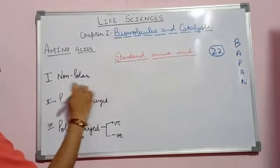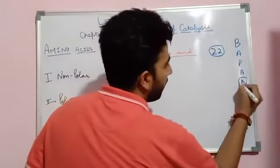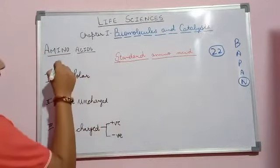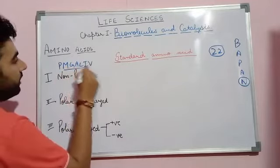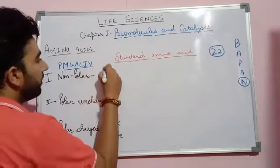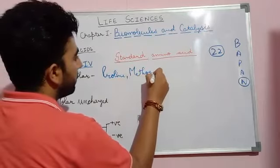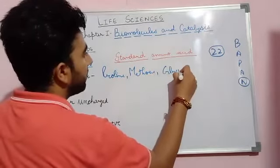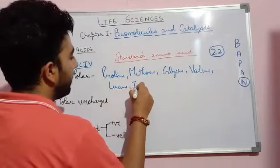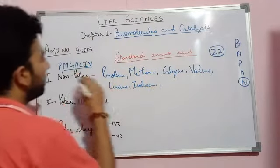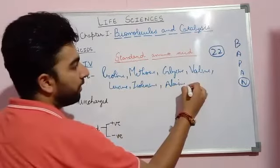Let us discuss the first type: non-polar amino acids. The mnemonic for non-polar amino acids is PMGALIV. Non-polar standard amino acids include proline, methionine, glycine, alanine, leucine, isoleucine, and valine. Along with these seven there are two more.